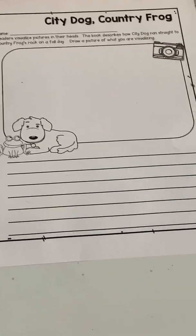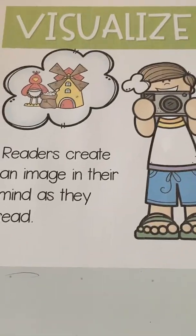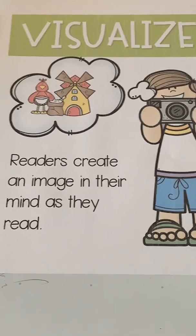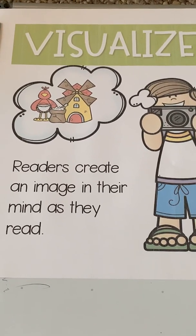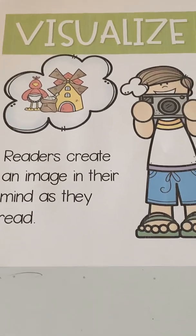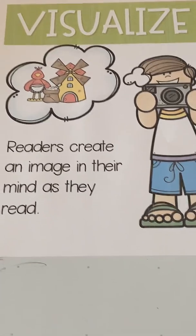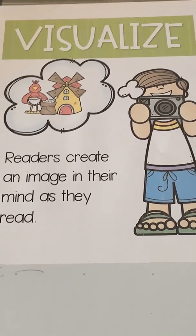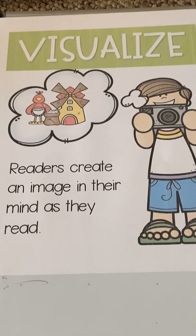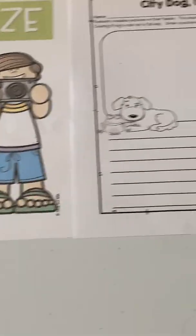But today I just want you to tell someone next to you what you were visualizing when this part of the story happened. Think about when City Dog didn't stop to sniff the falling leaves — he ran straight for the Country Frog's rock on the fall day. So when you pictured a fall day, what were you picturing? Where would that frog and the dog be? Pause and tell someone what you were visualizing or picturing in your brain.